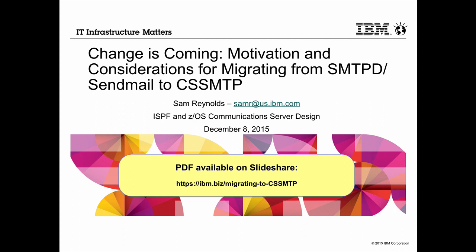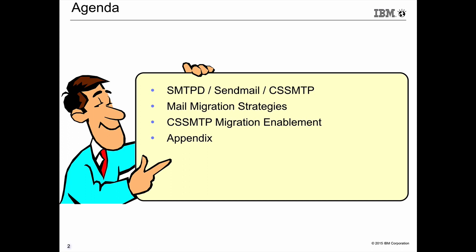In the middle of the title chart there is a link to a copy of these charts on SlideShare, so if you'd like a PDF you can pull down the charts using that URL. We'll move forward to the agenda: we'll start with a quick review of the three mail programs provided with z/OS Communication Server, then talk about migration strategies to get from the first two to the third, and then discuss some things in recent z/OS v2r2 to make your migration to CSS SMTP a little bit easier.